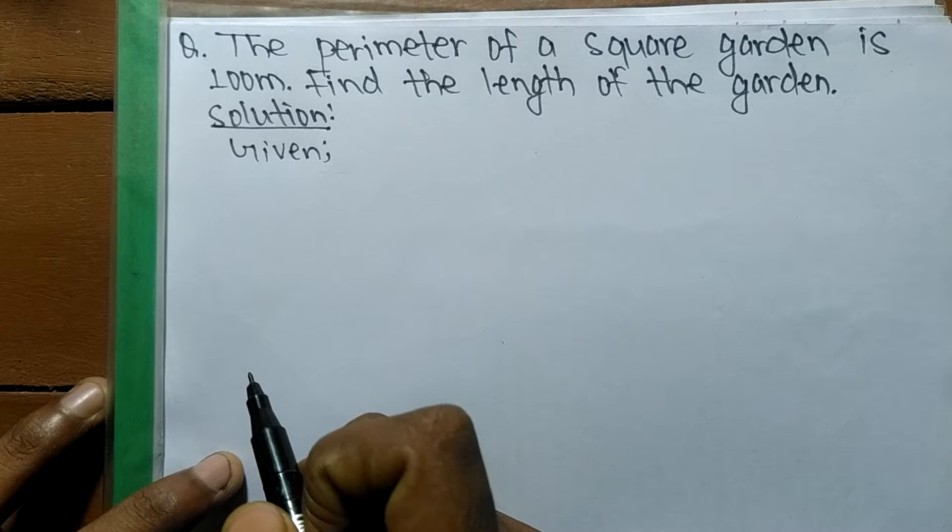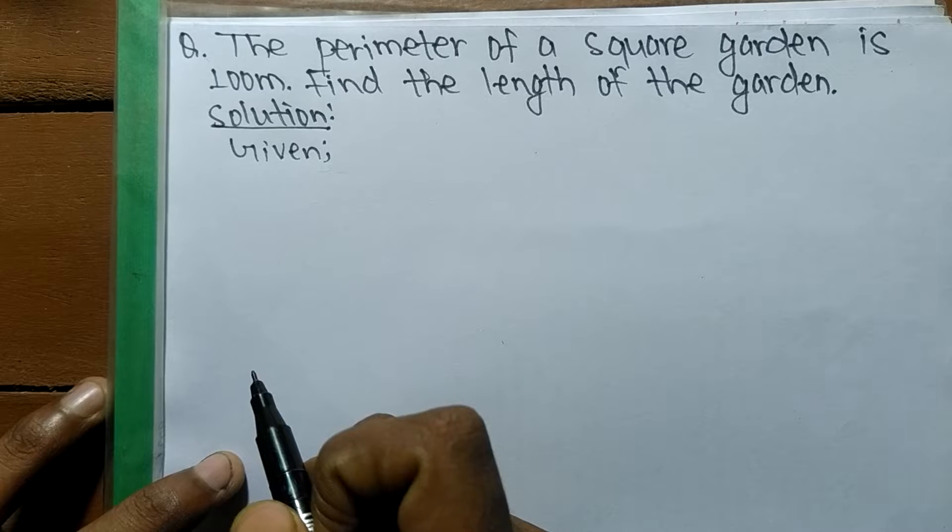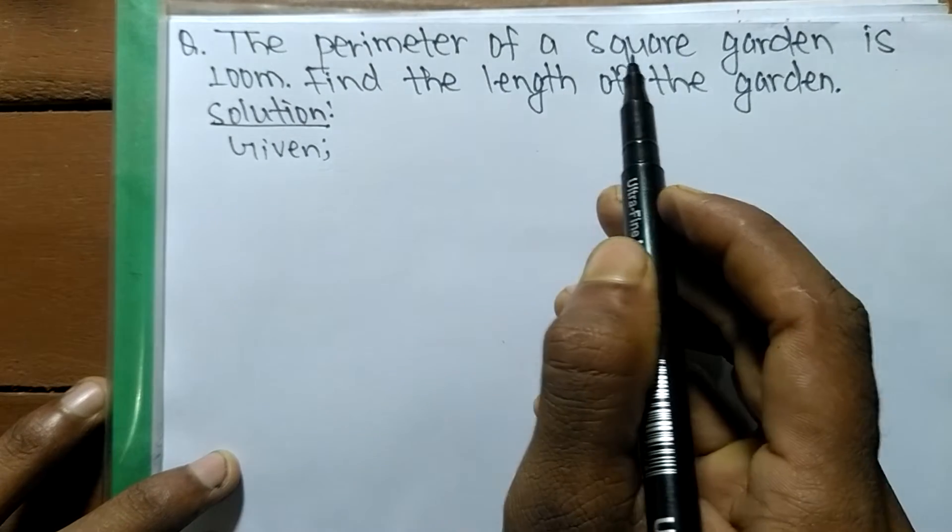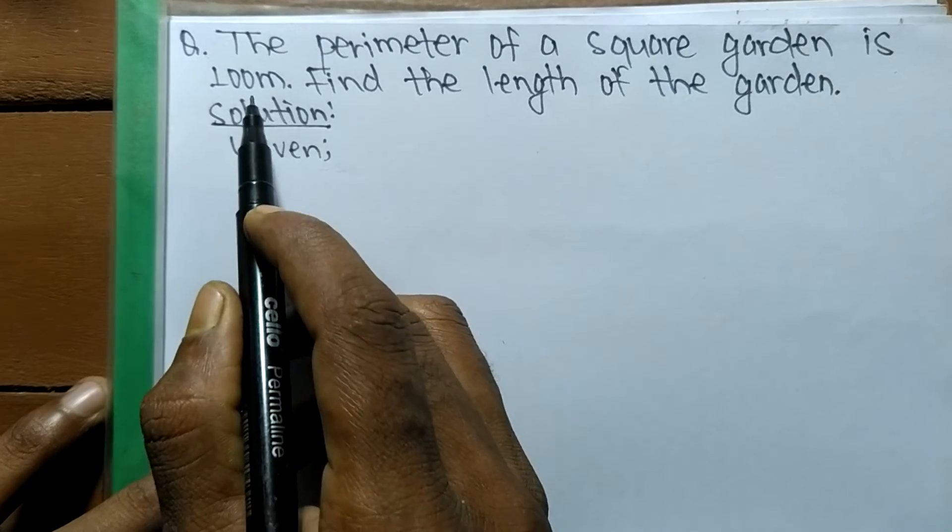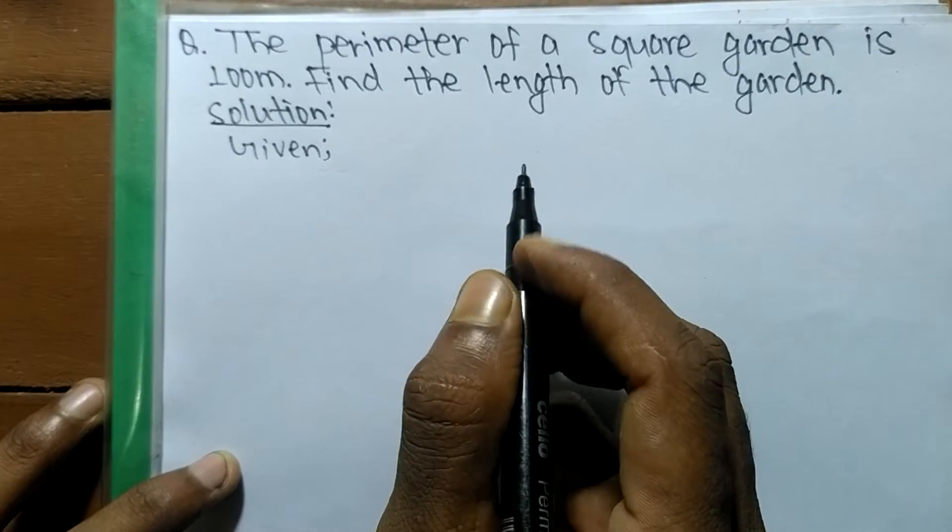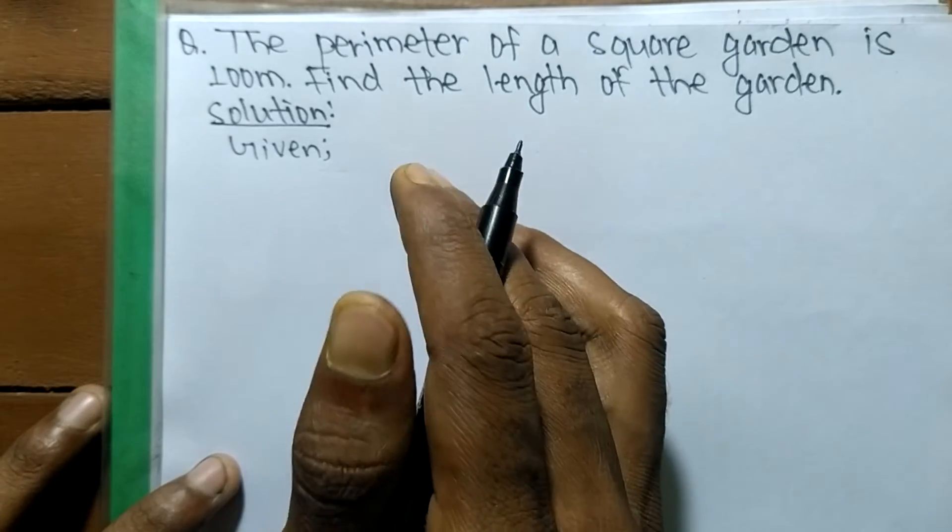So today in this video we are going to solve a word equation. The question is: the perimeter of a square garden is 100 meters, find the length of the garden.